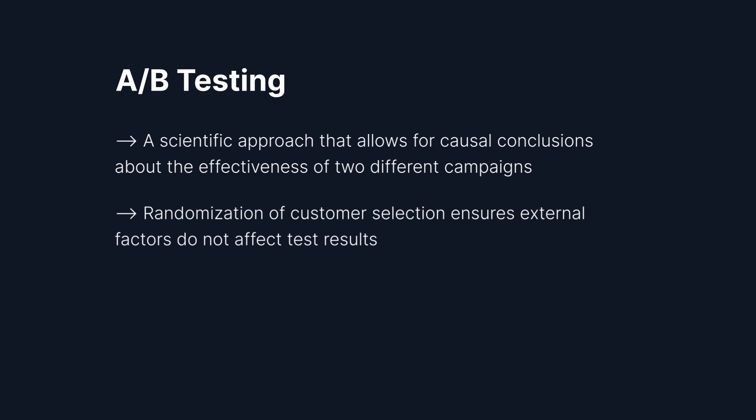I recommend A/B testing because it is the only scientific approach to make causal conclusions. The key component of A/B testing is randomization, where we randomly assign our customers into both control and treatment — the two different versions of the campaigns — in order to build an apple-to-apple comparison and ensure that the difference in results is only because of the content being different, because everything else stays the same due to randomization.